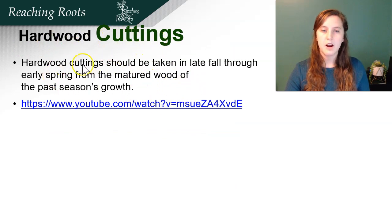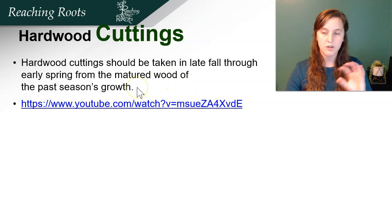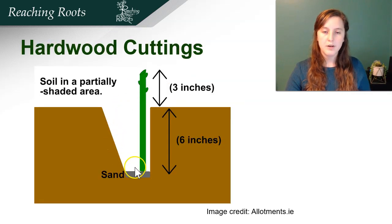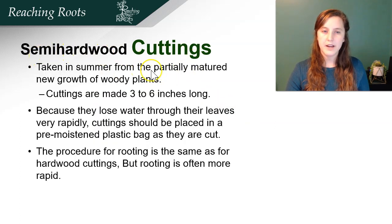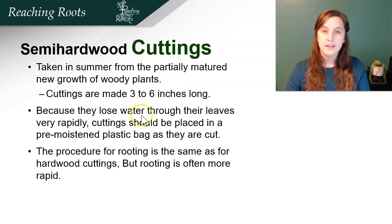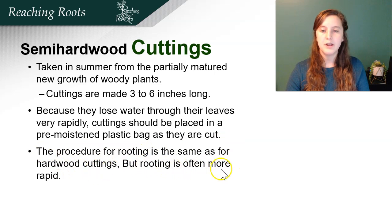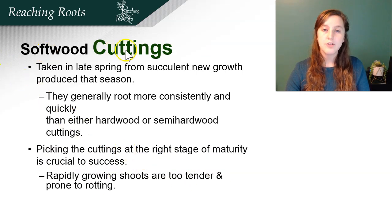Hardwood cuttings should be taken in late fall through early spring from the mature wood of the past season's growth — not old wood, but just from the past season's growth. Hardwood cuttings should be around nine inches tall with three inches to the top and six inches below. You want to put these in a shaded area to reduce transpiration. Semi-hardwood cuttings are taken in summer from partially matured new growth of woody plants, three to six inches long, and should be placed in a pre-moistened plastic bag as they're cut.